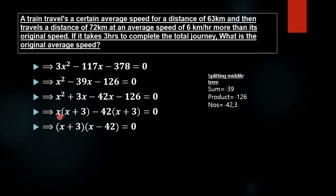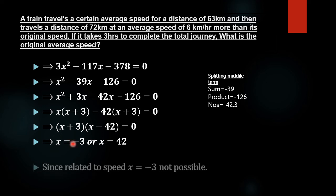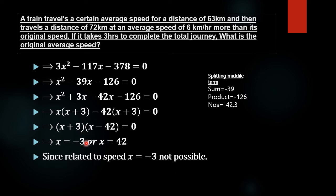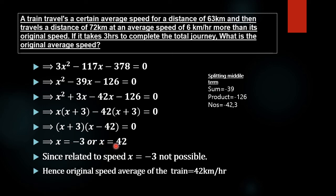We know that if a times b equals 0, either a equals 0 or b equals 0. So x plus 3 equals 0 gives x equals minus 3. Since x relates to speed, minus 3 is not possible. Therefore, the original average speed is x equals 42, that is, 42 km per hour.